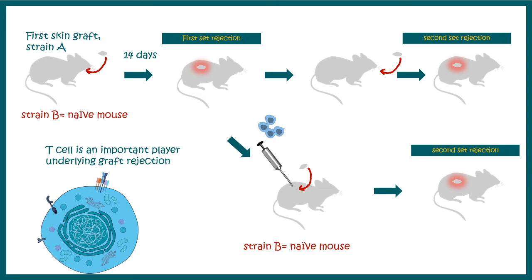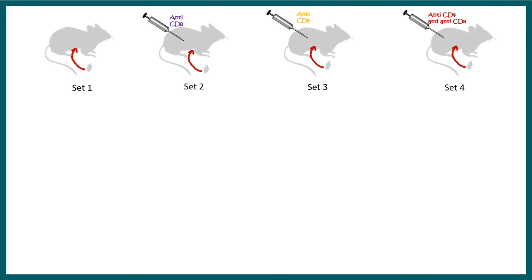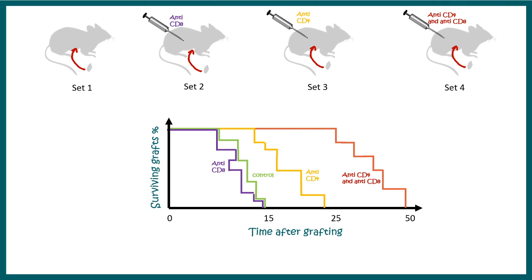A second set of experiments confirms this more definitively. Four groups of mice received grafts. In group two, anti-CD8 antibodies were given to neutralize CD8 T cells. In group three, anti-CD4 antibodies neutralized T helper cells. In group four, a combination of anti-CD4 and anti-CD8 was given. When both CD4-positive and CD8-positive T cells were blocked, graft survival time was very high compared to blocking either population alone. This confirms that T cells are the key players behind graft rejection.